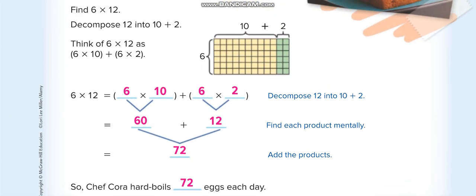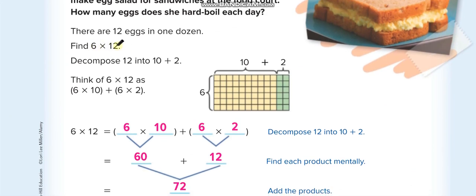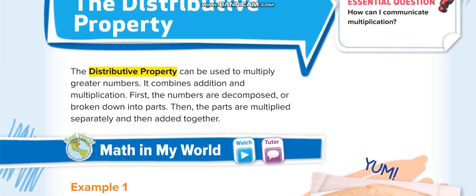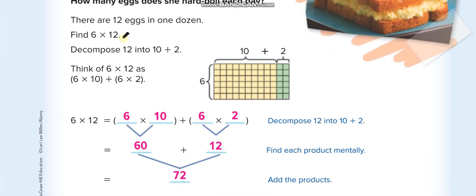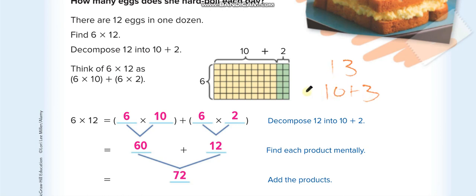In this lesson we are multiplying, for example, 6 times 12. We use the distributive property, which means we break the bigger number into two parts. So for 6 times 12, we decompose 12 into 10 plus 2. Similarly, if you have 13, you break it into 10 plus 3, according to the place values — ones and then tens.